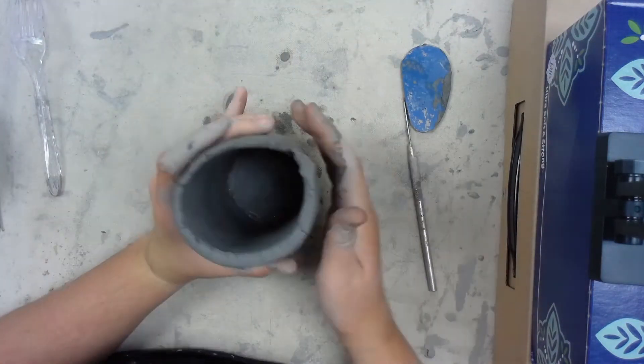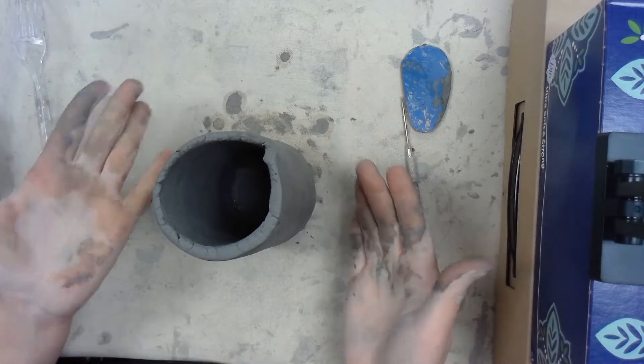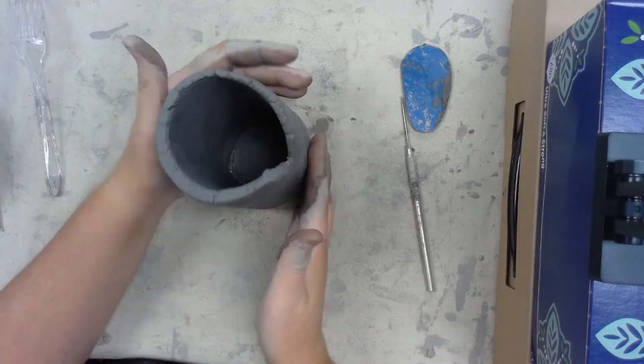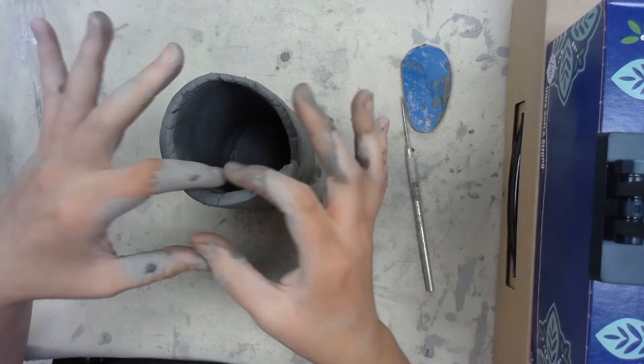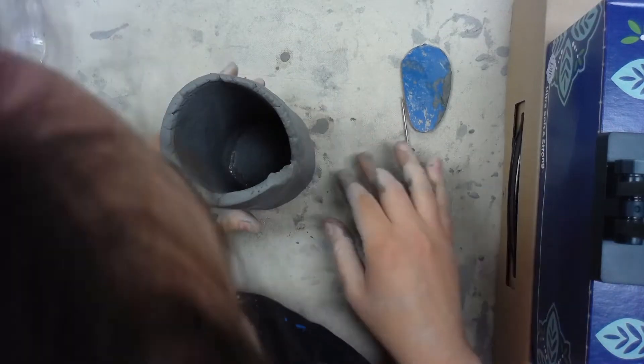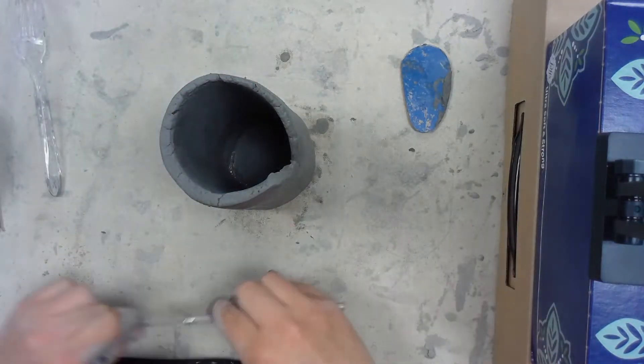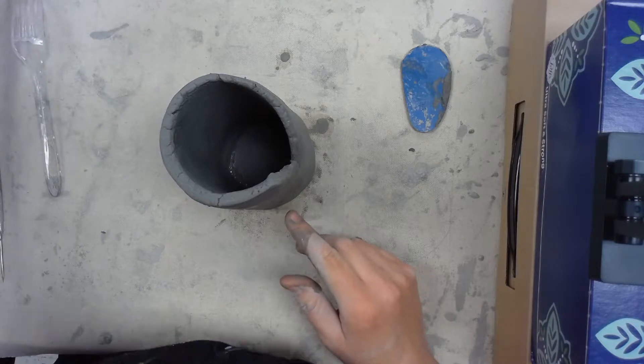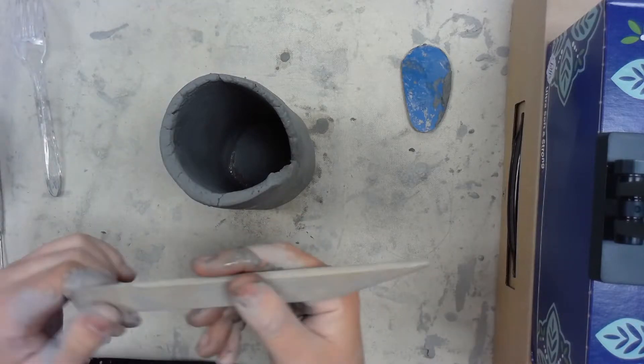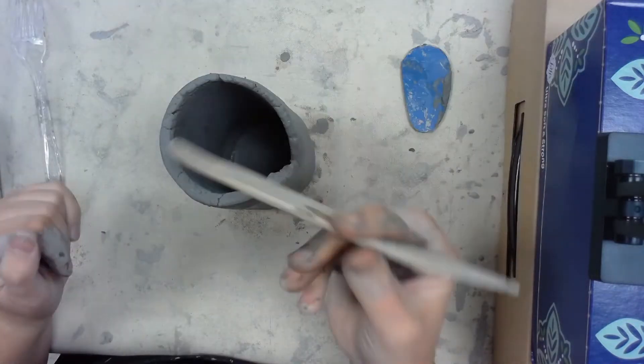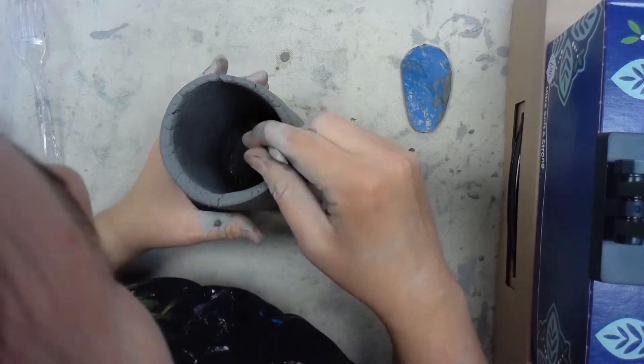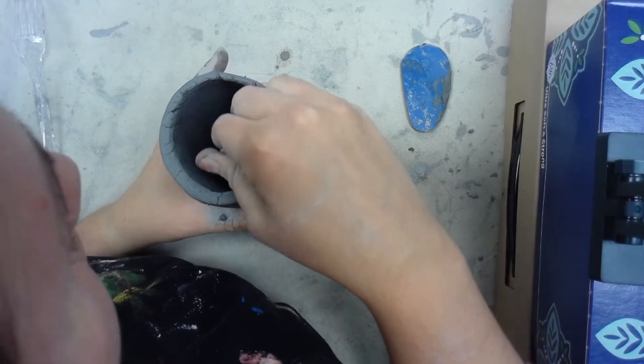Now I have the basic form of my mug, I have the glass portion. What you can do next is you could take a modeling tool, preferably a long one like this, and you could smooth out the edges on the inside of your mug if you really want it to be smooth. It's just a lot harder because it's narrow.